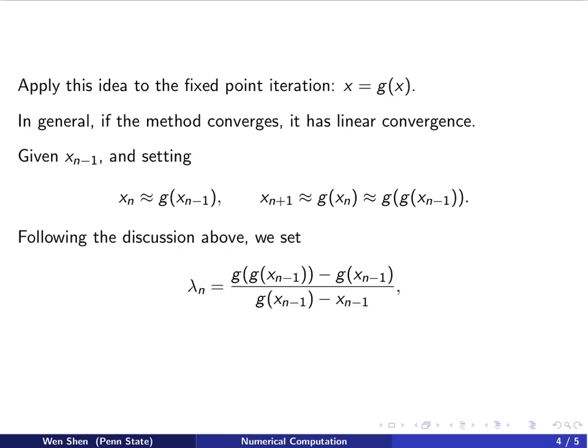Now, following the discussion above, we can use these axes, Xn minus 1, Xn, Xn plus 1. Plug it in to get an approximation for this lambda n. So lambda n would be Xn plus 1 minus Xn over Xn minus Xn minus 1.